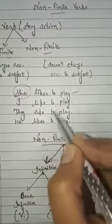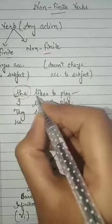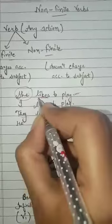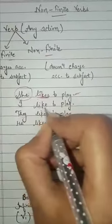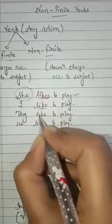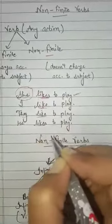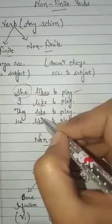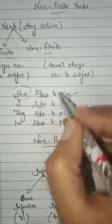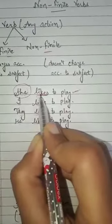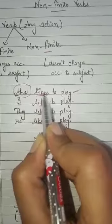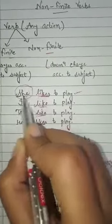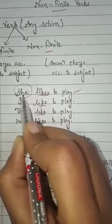As you can see in these examples, the main verb 'like' changes its form. 'Likes' is used with 'she,' 'like' is used with 'I,' 'like' with 'they,' and 'likes' with 'he.' Why are we using different forms? You must have heard about simple present tense — with a singular subject we always use first form plus 's' or 'es' when talking about routines or habits.